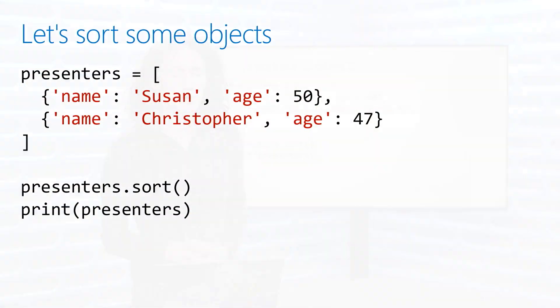Let's say I want to do something quite simple — I want to sort some objects. Each object has a couple of different properties to it.